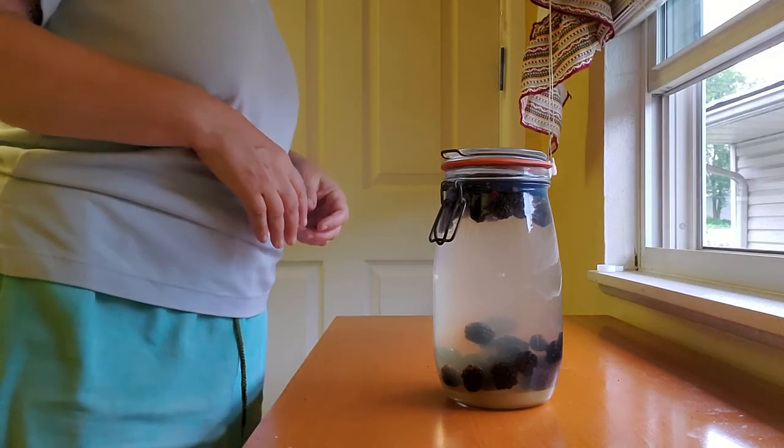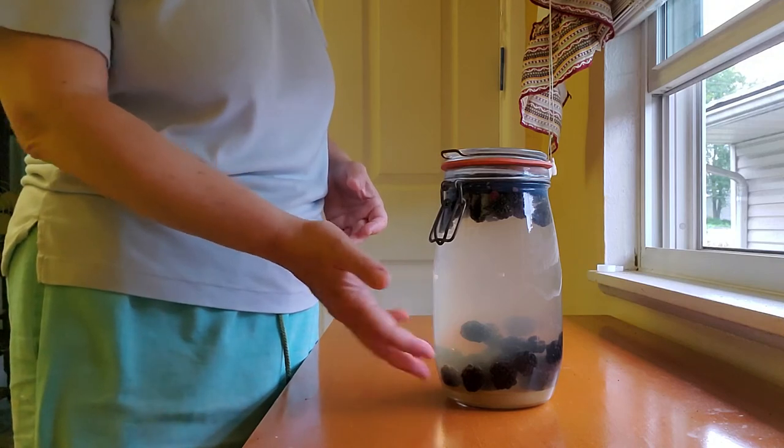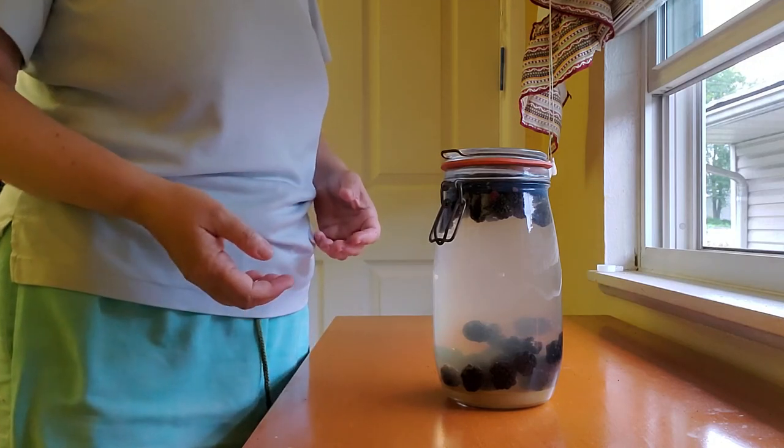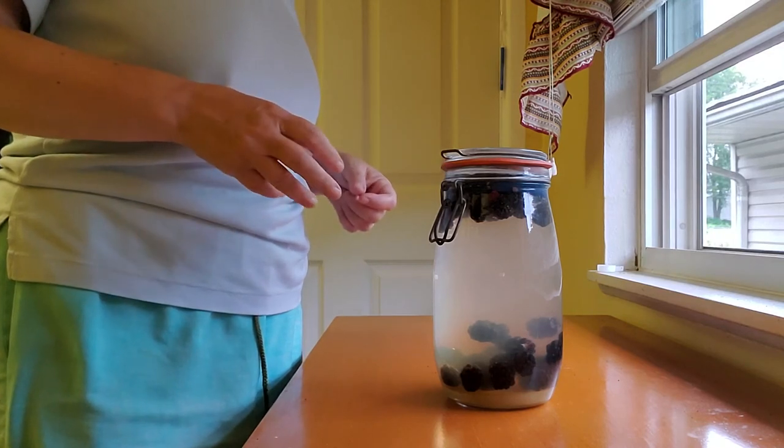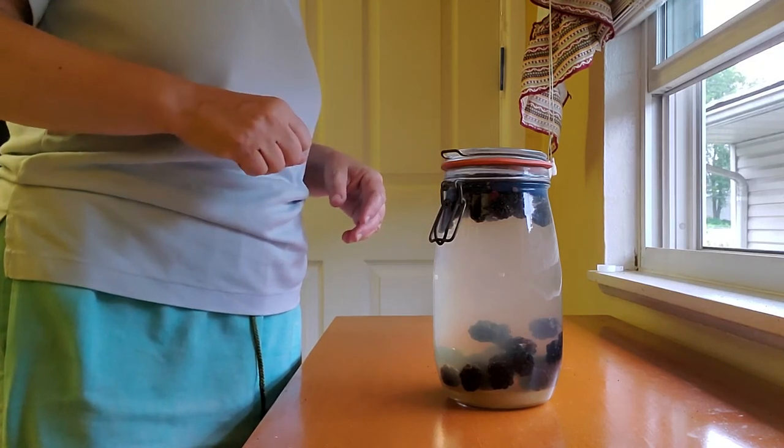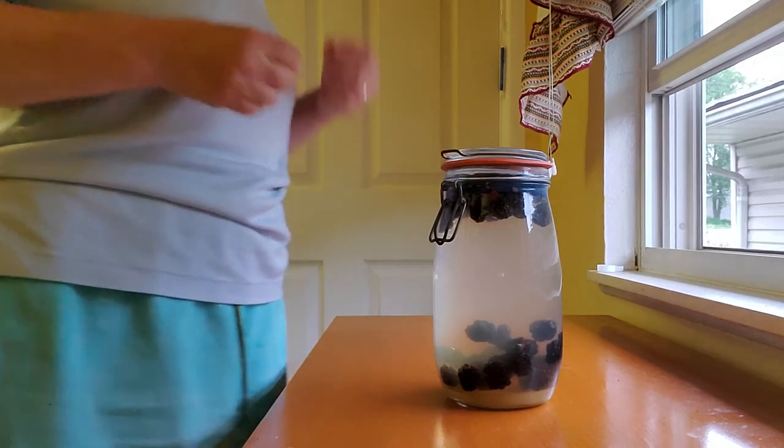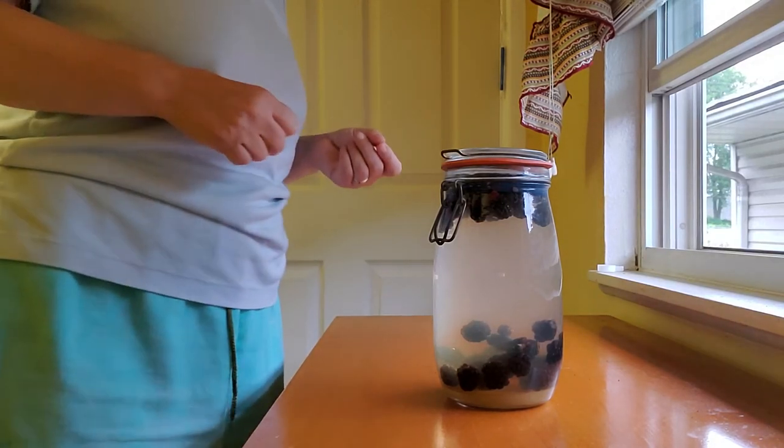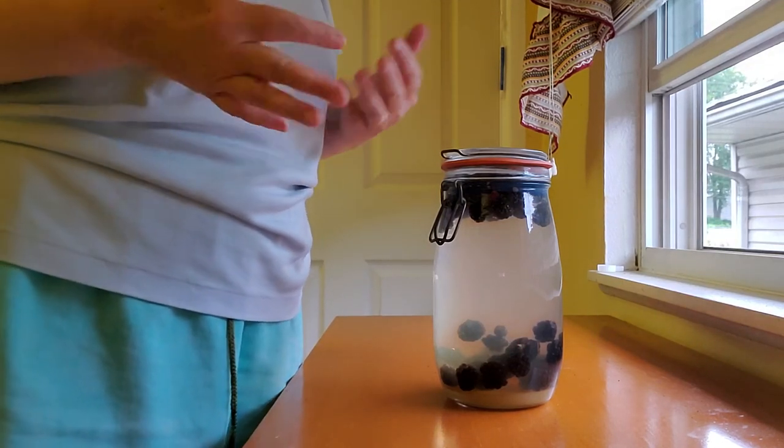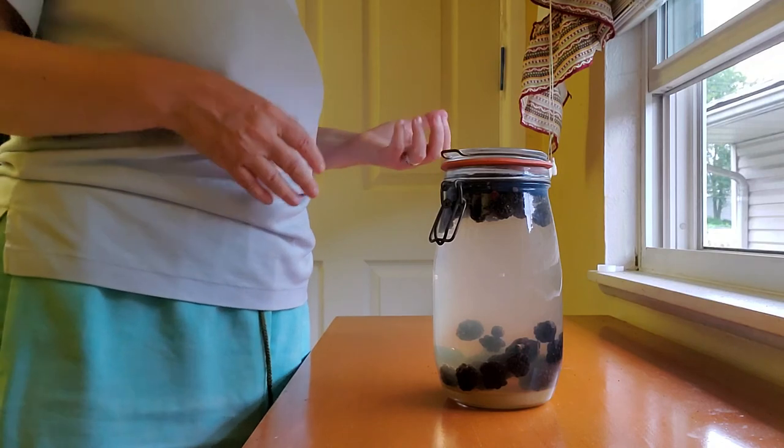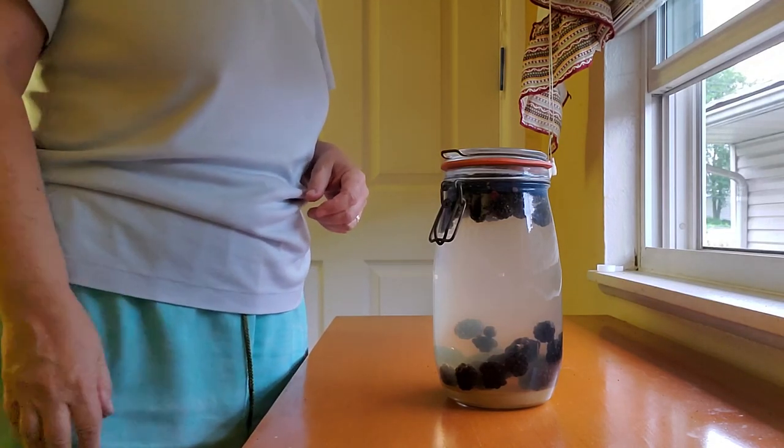I'll stir it like I say twice a day and I would expect that in the next couple of days the water will start to take on the color of the berries, it'll start to get a little purple pink and it'll start to fizz. And each day when I stir it I'll take a little taste and depending on the temperature, three four days up to a week to get it when I want, and then I'll put it in the flip top bottles.